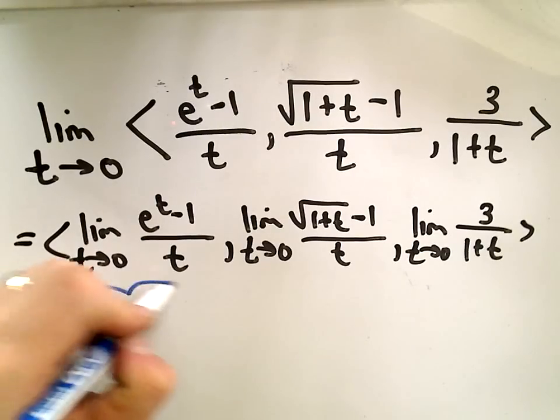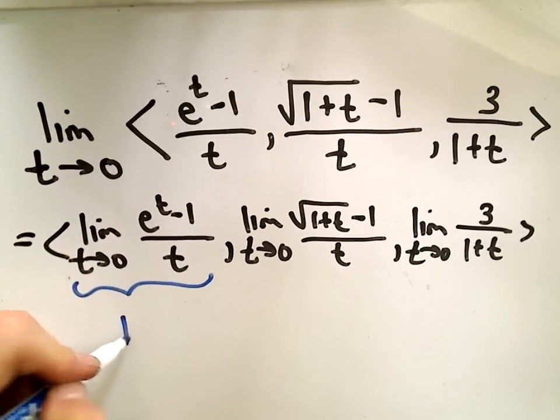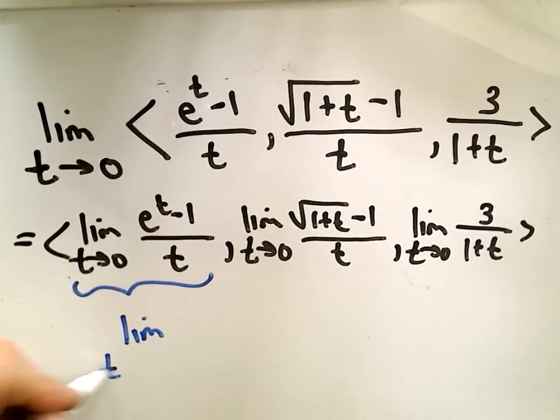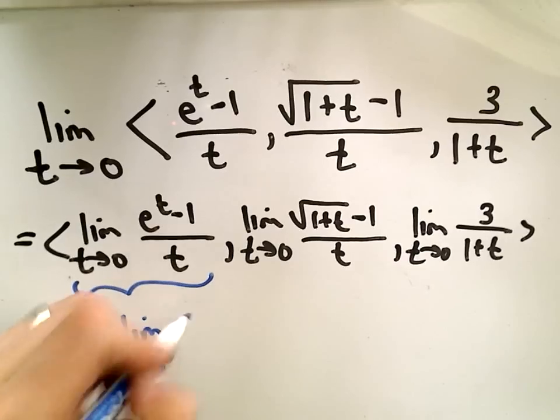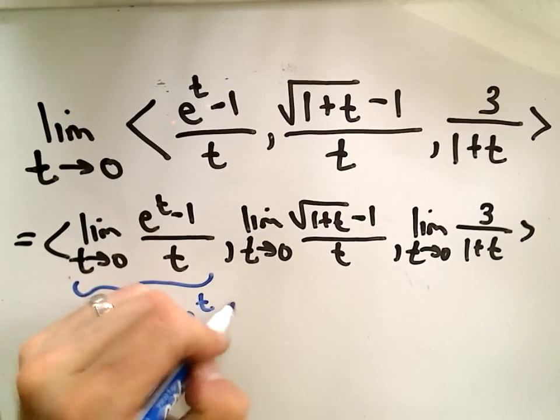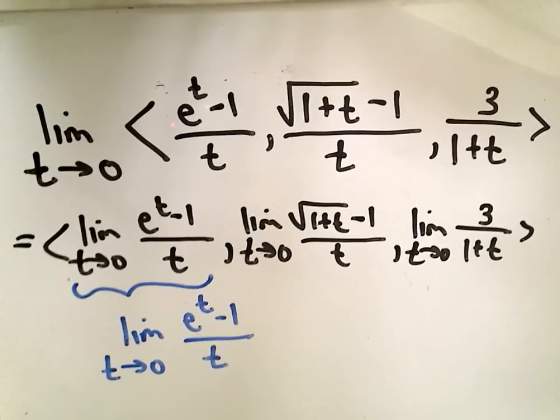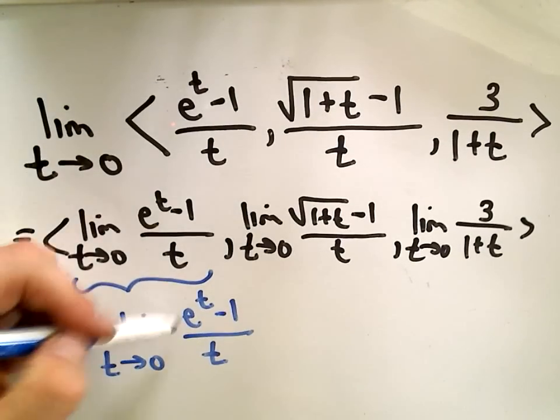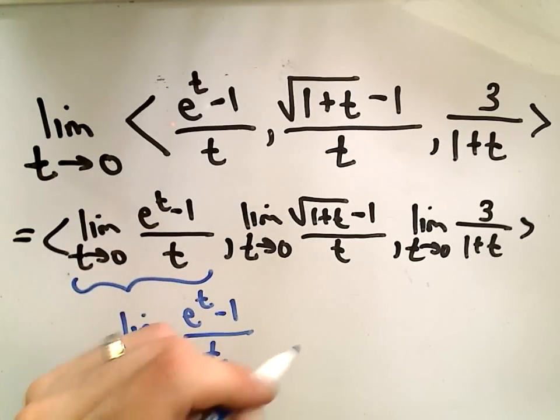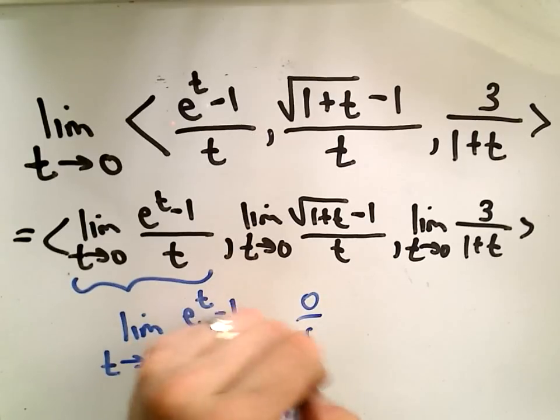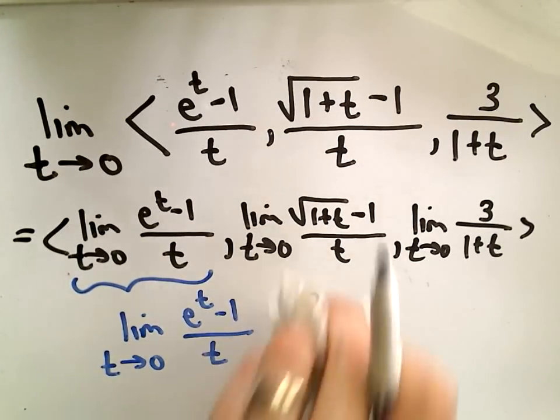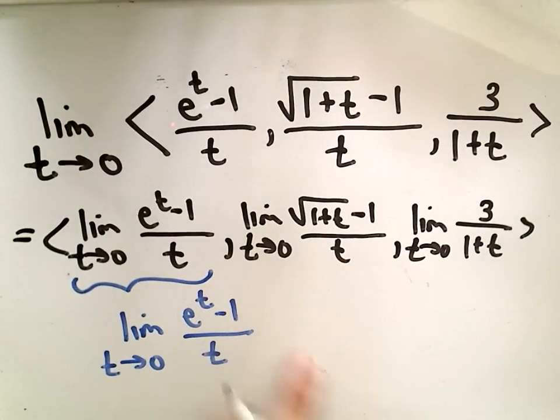So if we look at the limit of the first part, let me look at that individually down here. So we'll have the limit as t approaches 0 of e to the t minus 1 over t. Again, notice if I plug in 0, we'll get e to the 0, which is 1 minus 1, so 0 over 0. And since we get 0 over 0, that means we can simply use L'Hopital's rule.